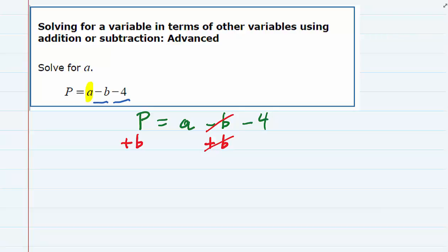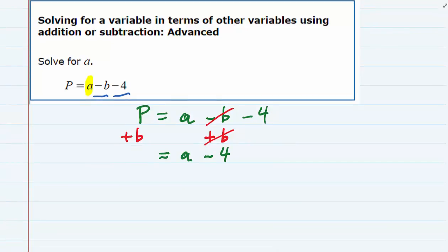So just to clean that up, we now have on the right-hand side the a, and the minus 4 is still there with it. On the left-hand side, the p plus b, those are not like terms. There's nothing that I can do other than just rewrite p plus b, since they're not like terms.